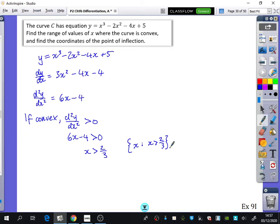And they also wanted to find the coordinates of the point of inflection. So you need to know now point of inflection if the second derivative is equal to 0. In other words, 6x - 4 equals 0 or x equals 2/3.